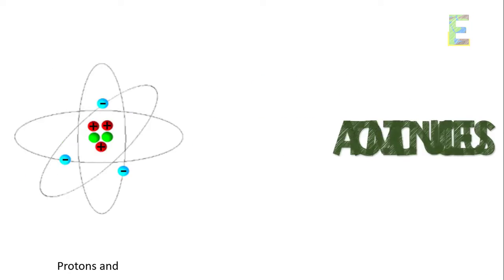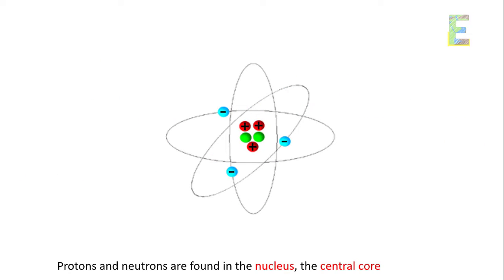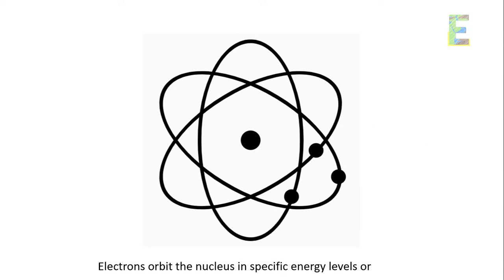Atomic nucleus. Protons and neutrons are found in the nucleus, the central core of the atom. Electrons orbit the nucleus in specific energy levels or shells.